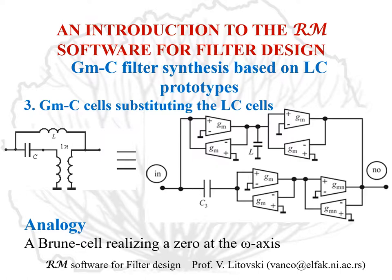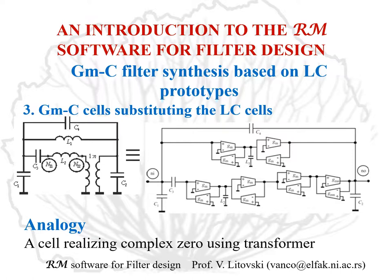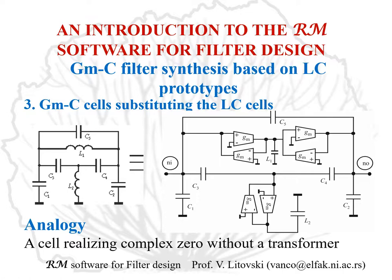Here is the Brune cell, which realizes the zero at the omega axis but with a transformer — here the inductor and the transformer. In the bottom horizontal line we have, from left to right: capacitor, inductor, transformer. On the top we have the inductor L1. And finally, here is the cell which realizes the pair of complex transmission zeros without a transformer.